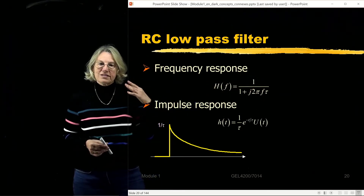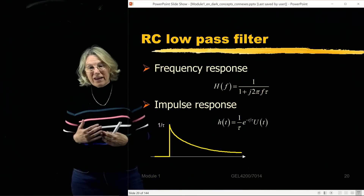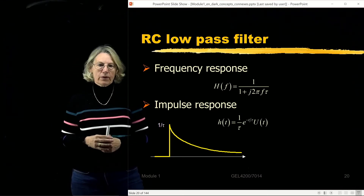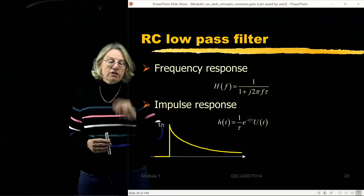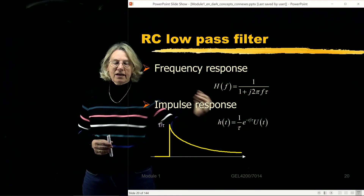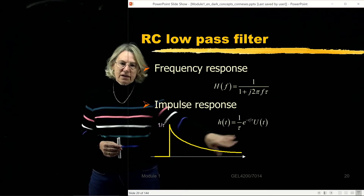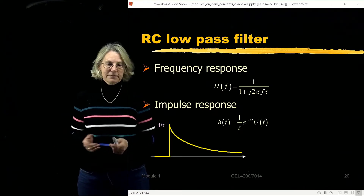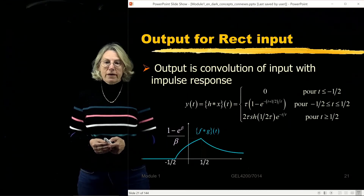As frequencies get very high, I'm dividing by a very large number, attenuating high frequencies, while lower frequencies see the least attenuation. Looking at the impulse response — the inverse Fourier transform of H of f — I get a one-sided decaying exponential. This doesn't look much like a sinc function, but it is a simple approximation of an RC low-pass filter.